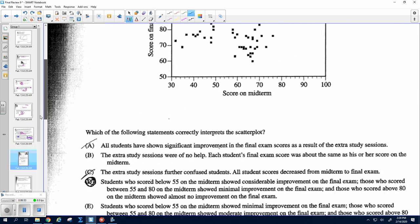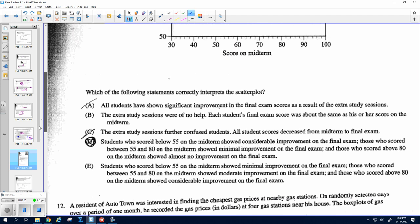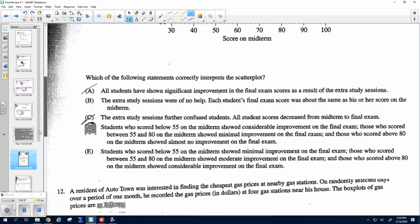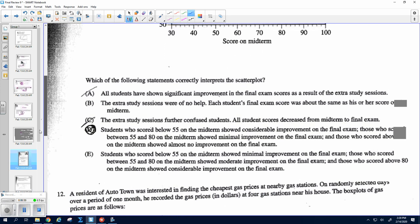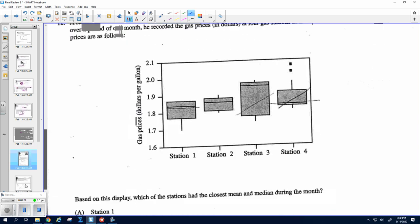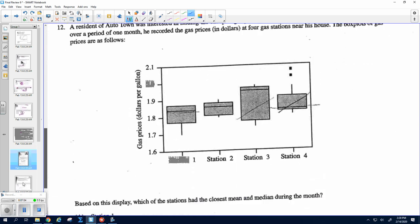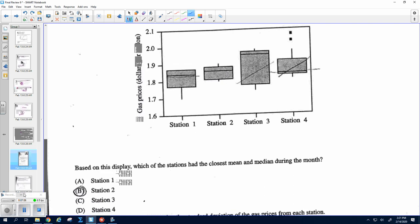Okay, we've got another one of these. I feel like we did one really similar to this earlier. The correct answer is D on this one. Okay, number 12, we are looking for which one has the closest mean and median. The ones that are going to have the closest mean and median is going to be the most symmetric. So this one right here is the most symmetric. This guy is skewed pretty far to the right, skewed pretty far to the right. This guy's got some outliers. So it is station 2.